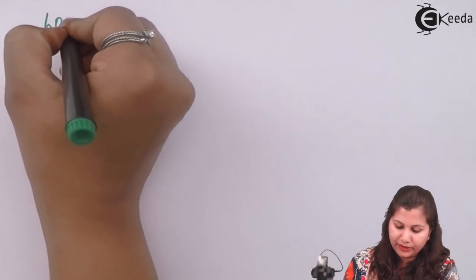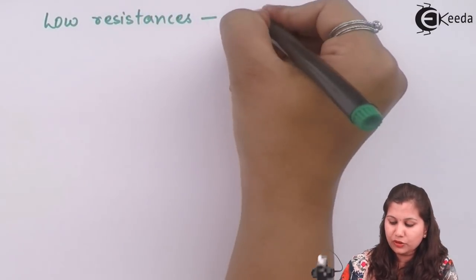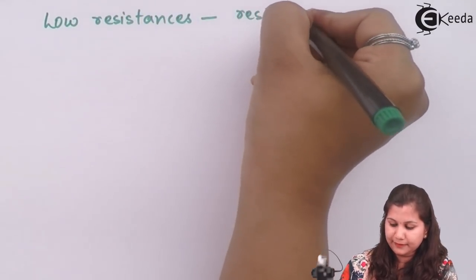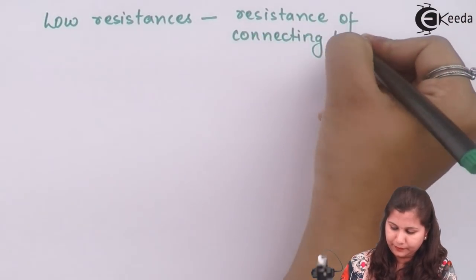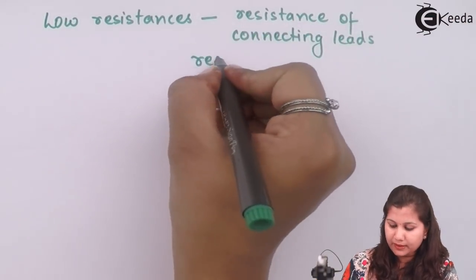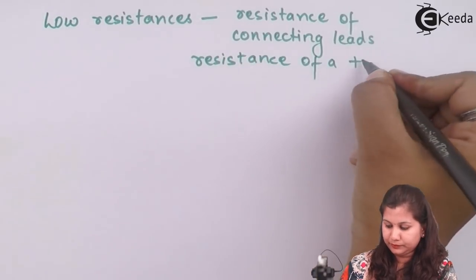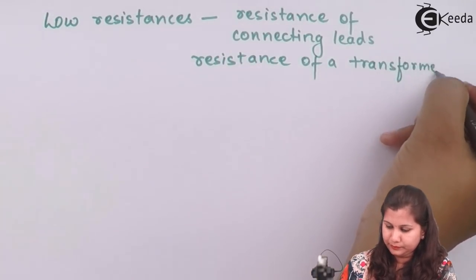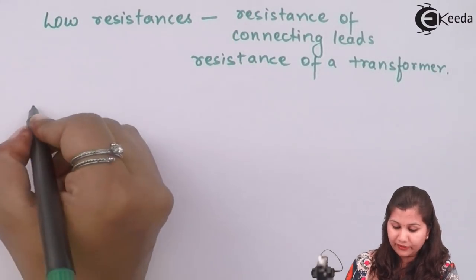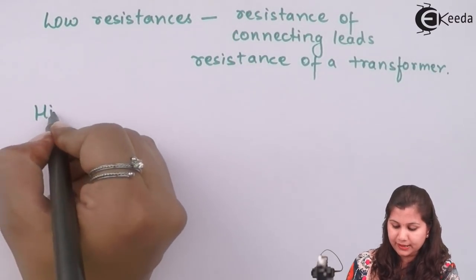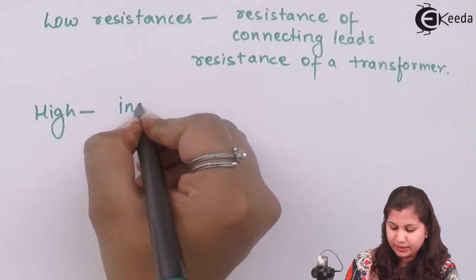These are examples of low resistances. If we talk about high resistances, insulation resistance is a good example of a high resistance.